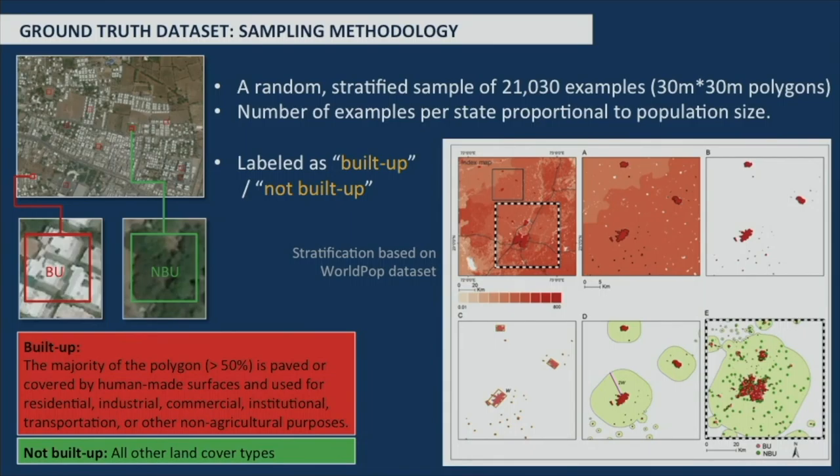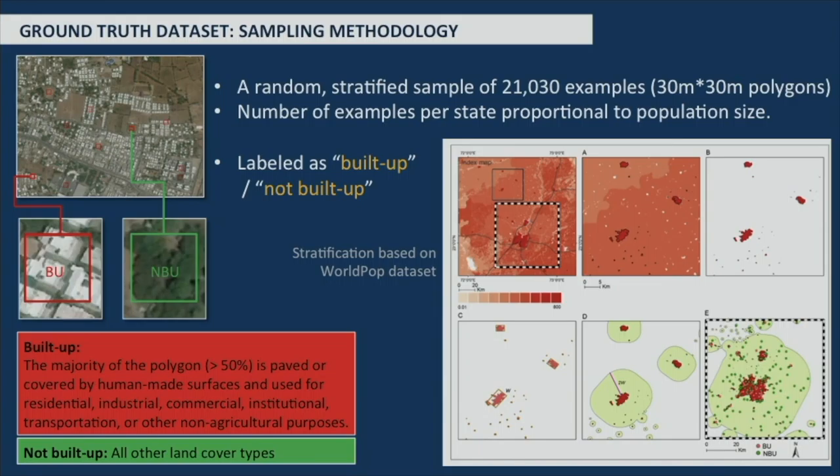We generated a random stratified sample of 21,000 examples, each 30 by 30 meters, distributed throughout the country proportionally to the population size of each state. For the initial stratification, we used the WorldPop dataset — a raster where each pixel is 100 by 100 meters with the number of people living in that pixel. We sampled 40% of our examples in highly populated areas and 60% throughout the periphery. Examples were labeled as built-up or not built-up: if a polygon is covered more than 50% by paved areas or man-made structures, it is labeled as built-up; otherwise, not built-up.